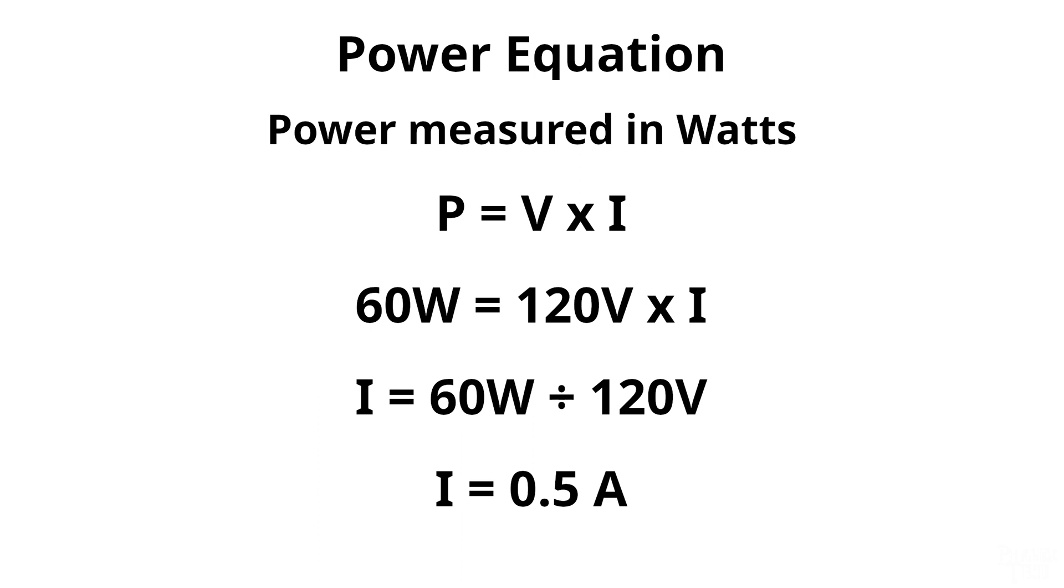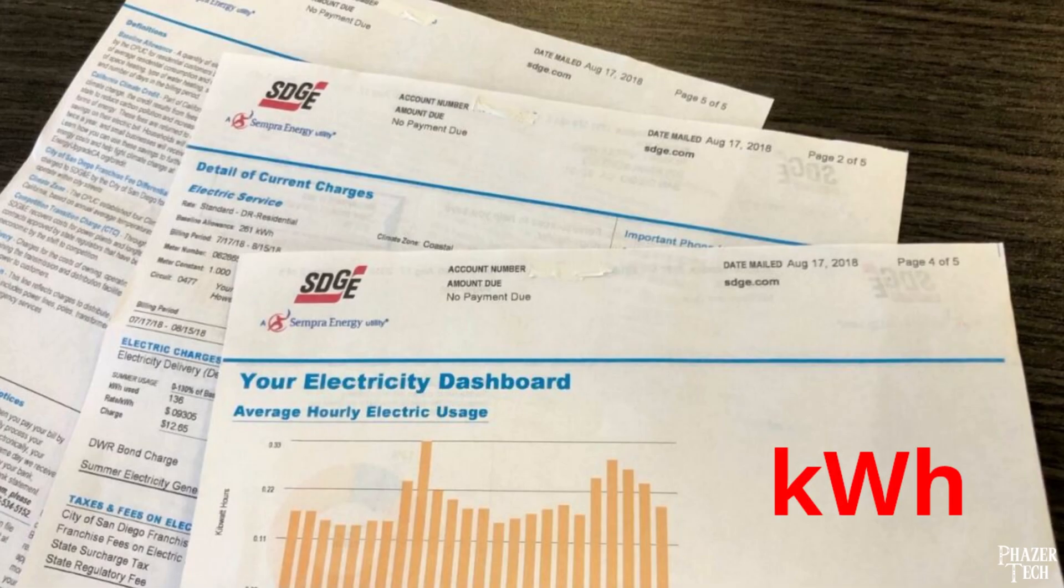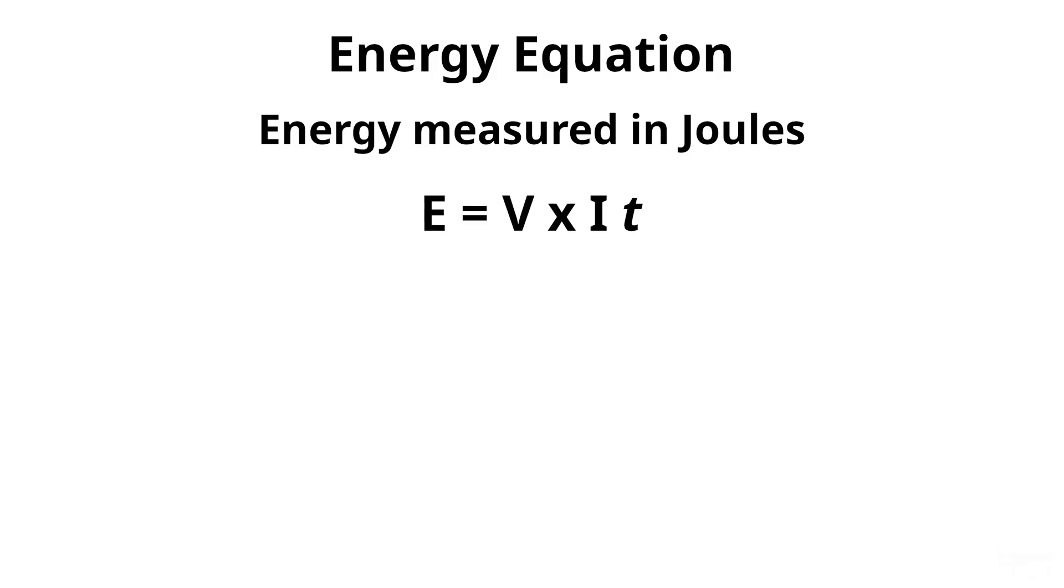But keep in mind that power is not the same thing as energy. Power only tells us how much energy a device is using at a given instance. But the amount of time the device is left on will determine how much energy it uses overall. And the power can fluctuate over time as well. That's why your electric bill isn't given in the unit of kilowatts, but rather in the unit of kilowatt hours. This is expressed by this equation where t stands for time.